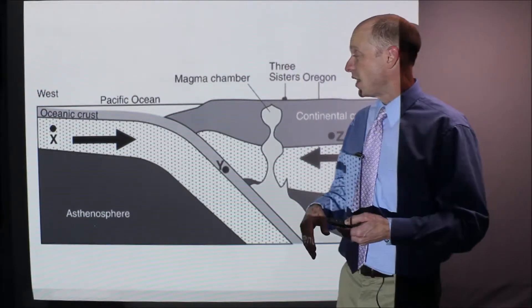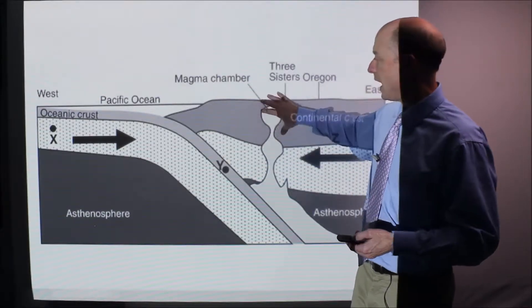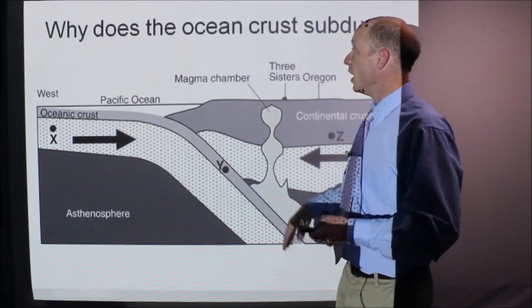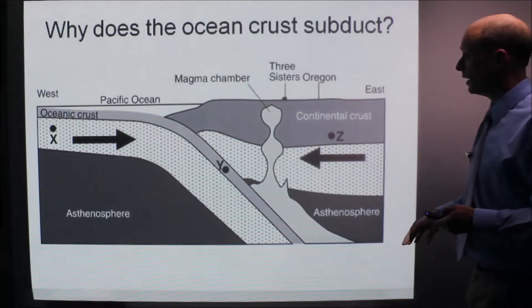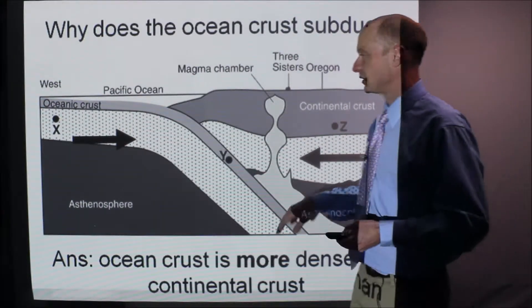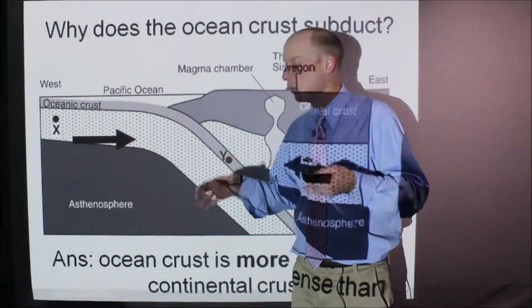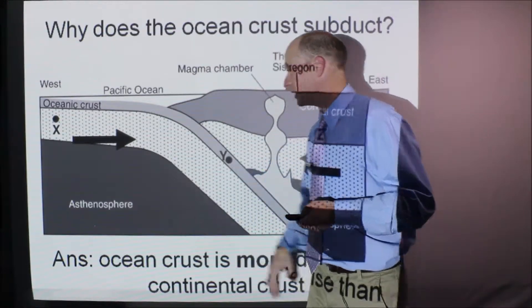Now, the question that often gets asked is why does the ocean crust go down? Why doesn't the continent go down? And that's because the ocean crust is more dense than the continental crust. So that makes it go down and sink. This is much more buoyant and more likely to kind of float. So this goes down into the asthenosphere.